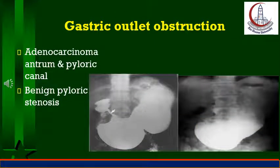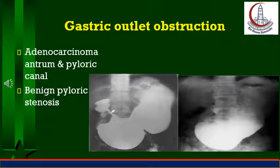Clinical features of gastric outlet obstruction include persistent epigastric pain, feeling of fullness, and copious vomiting characteristically at the end of the day, containing undigested food and being non-bilious. There is nausea and loss of appetite. Positive succussion splash is found at examination, and in severe cases the patient is confused because of alkalosis and electrolyte changes. Upper endoscopy is needed in all cases to rule out carcinoma. Barium meal shows the stomach to be dilated with the greater curvature below the level of the iliac crest, and barium will not pass into the duodenum.